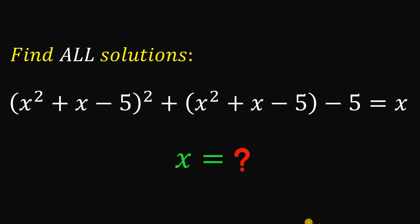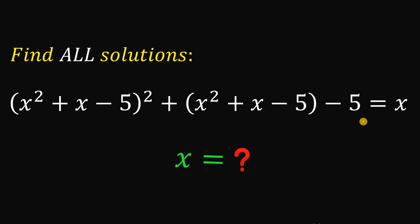Find all solutions — that means find all possible values of x that satisfy this equation: the quantity x squared plus x minus 5, raised to the power of 2, plus the quantity x squared plus x minus 5, minus 5, equals x. Pause the video now and see if you can answer this question, because I will show you the solution in 3, 2, 1.